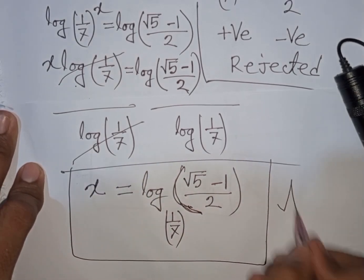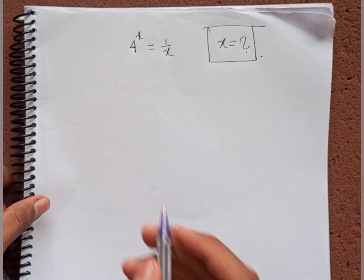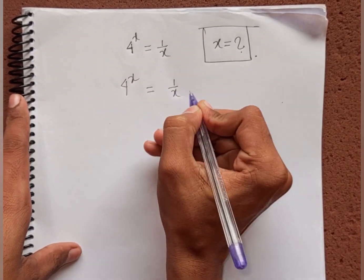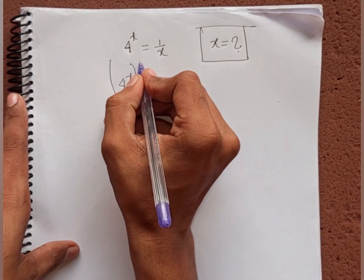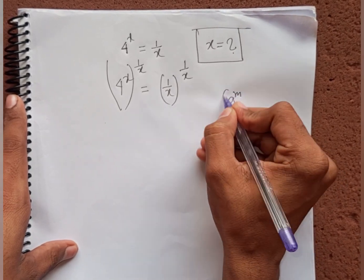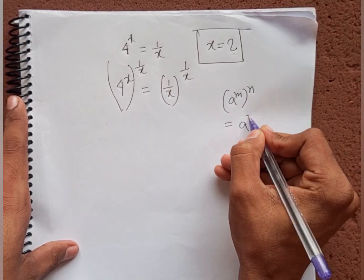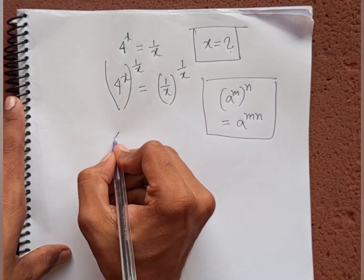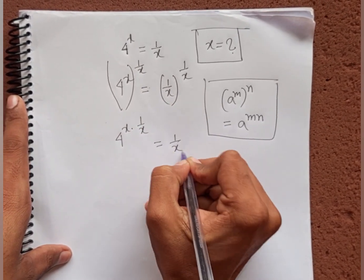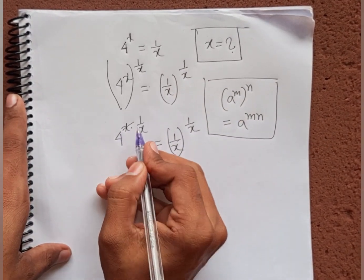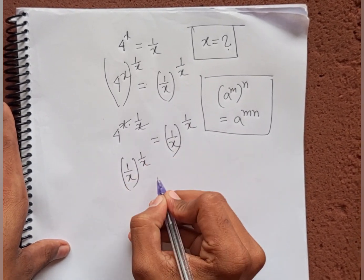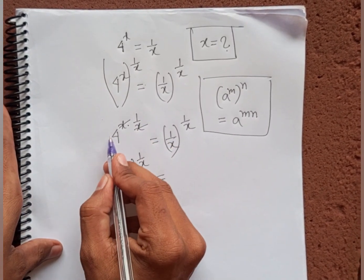How to solve 4^x = 1/x — find the value of x. We multiply both sides by x^(1/x). Using the rule (A^m)^n = A^(mn), it becomes 4^(x · 1/x) = (1/x)^(1/x). This x and x will be cancelled, so we have (1/x)^(1/x) = 4. Since 4 = 2², we get (1/x)^(1/x) = 2².